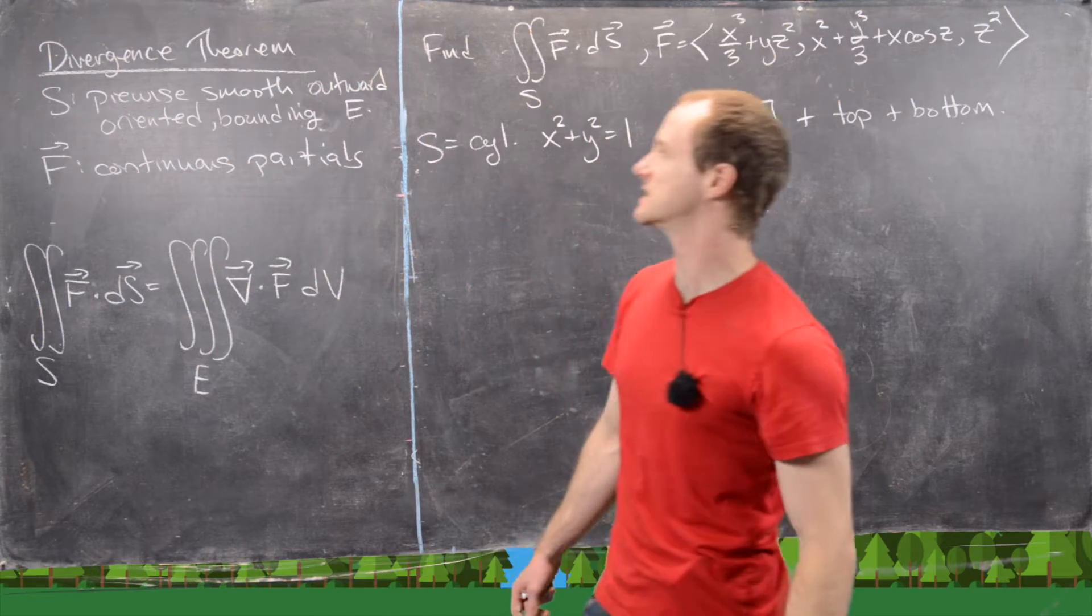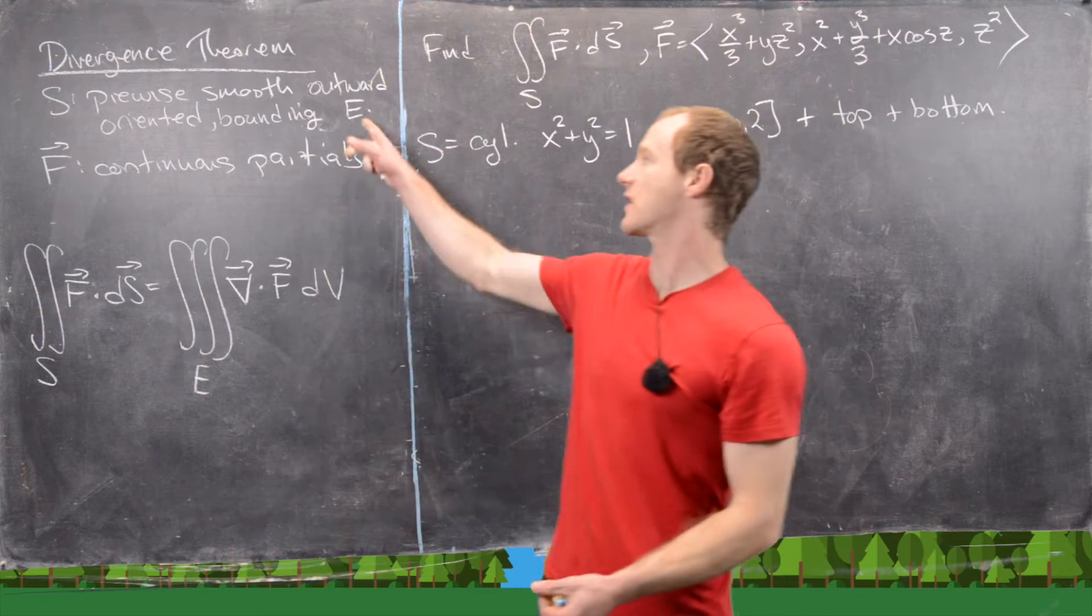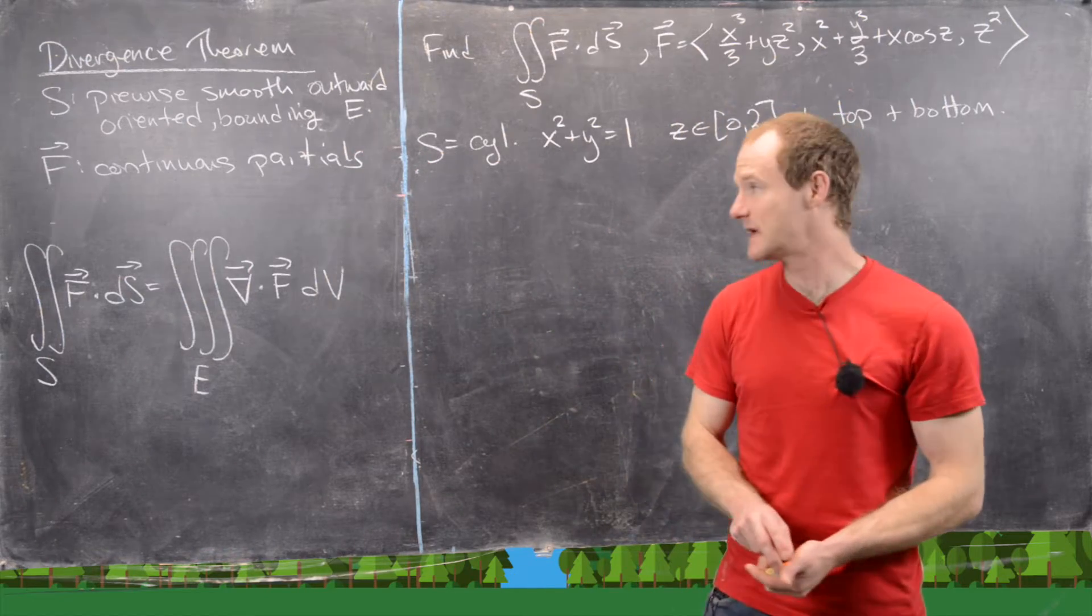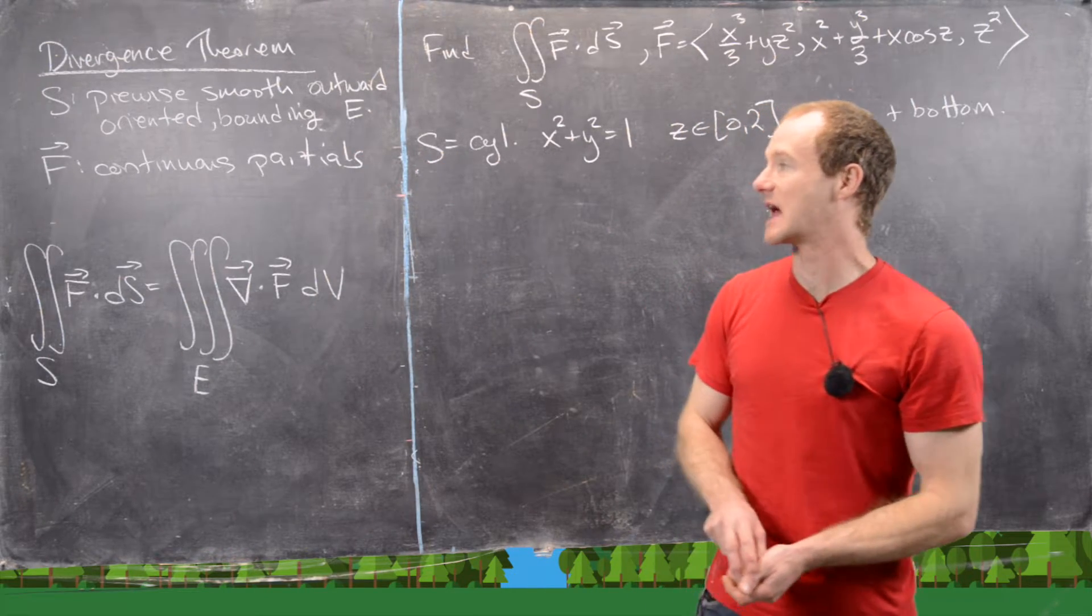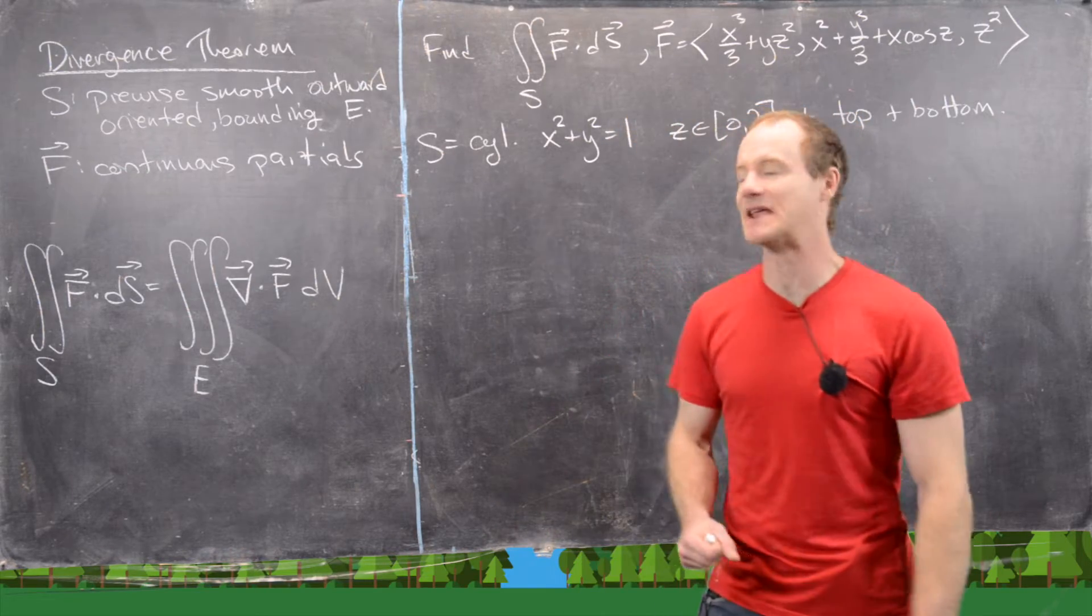If we've got S, which is a piecewise smooth outwardly oriented surface bounding a three-dimensional region E, and F has continuous partials on a region that contains E,